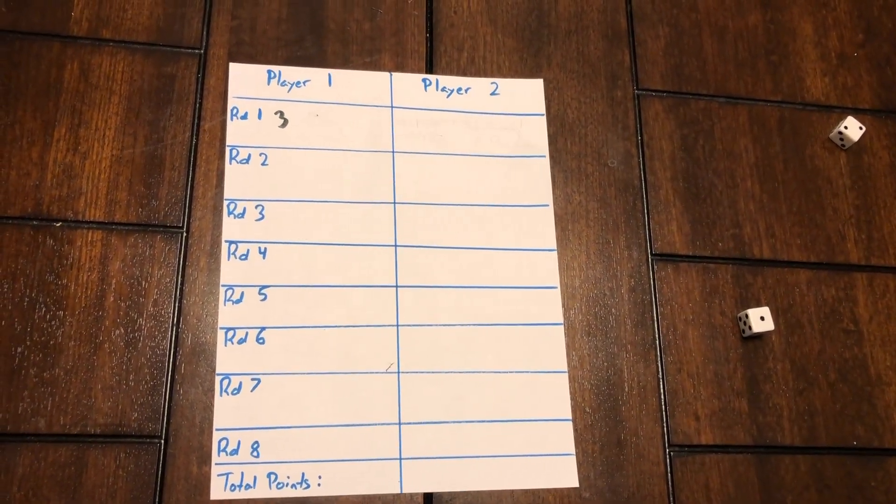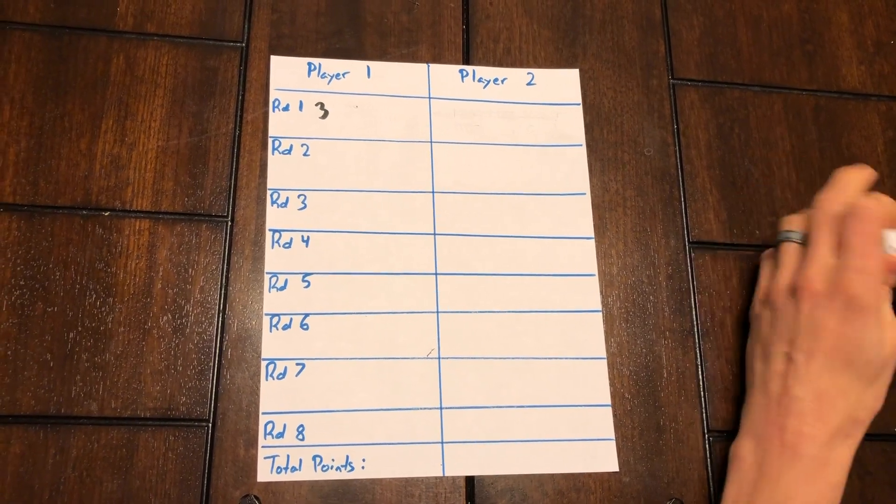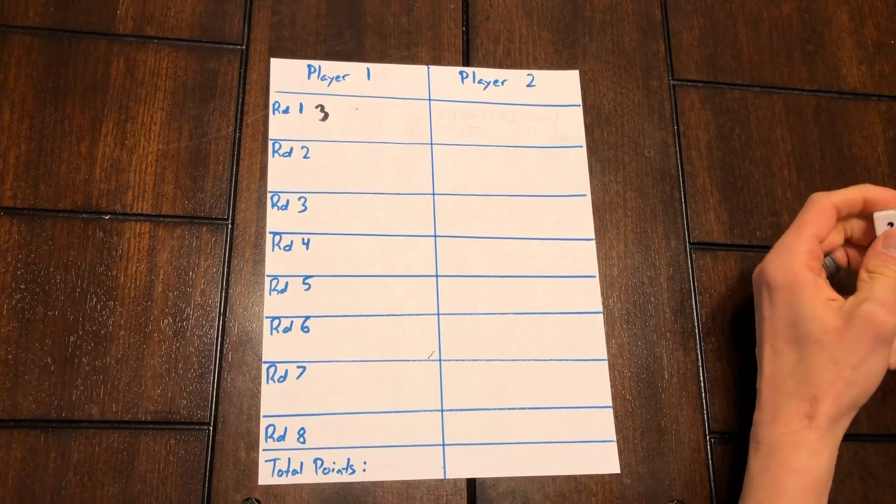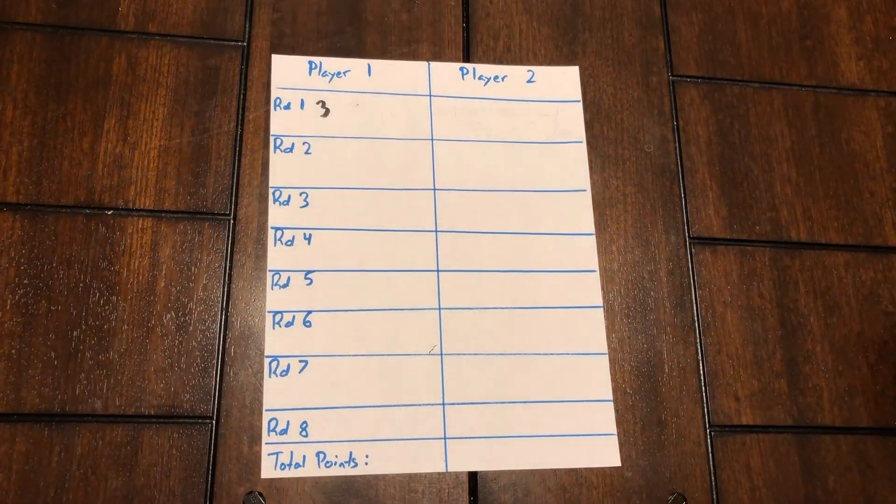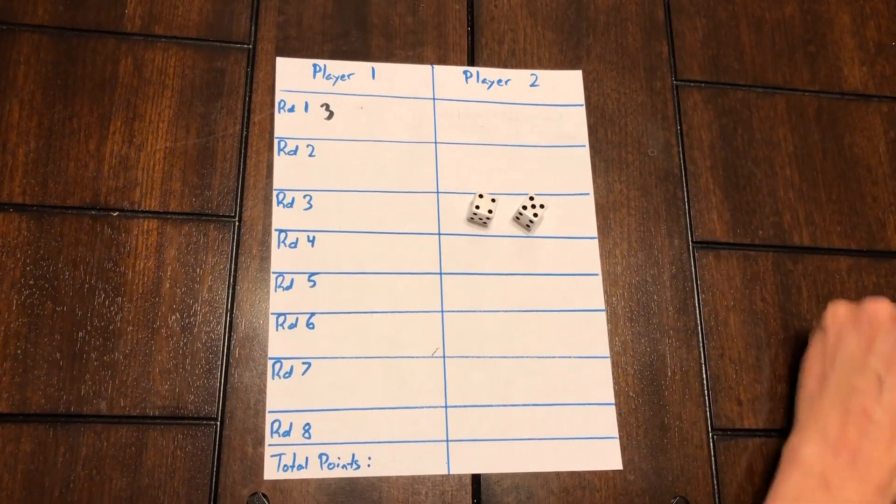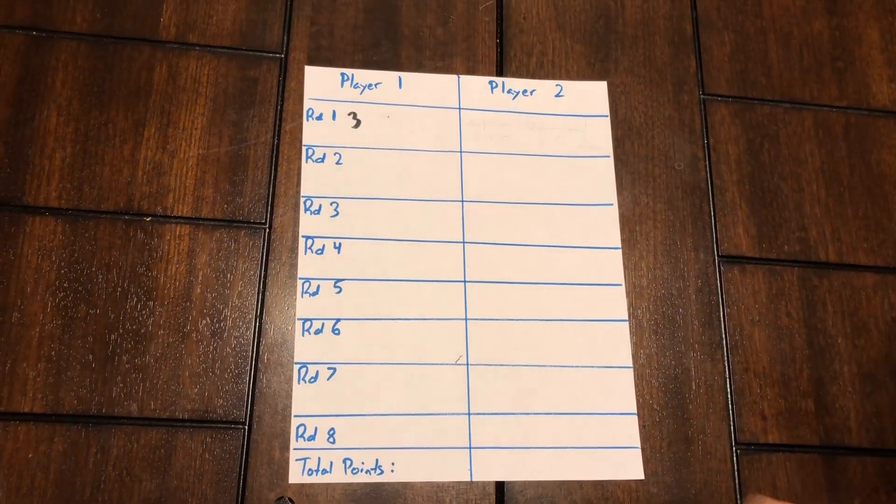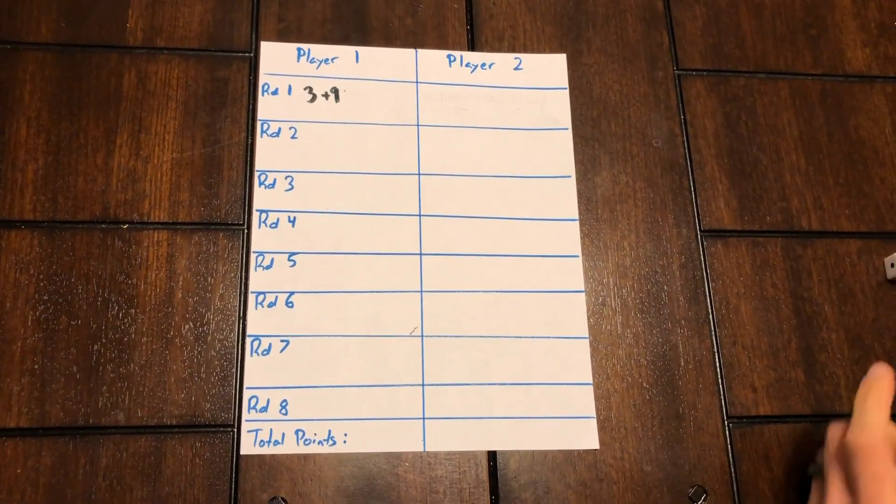Then I have a choice. I can decide to save that three, those three points, or I can risk that three and add to it by rolling again. The catch is, if I roll again and I hit an eight, I lose all those points. So I'm going to go ahead and roll the dice again, and I get a four and a five, which gives me nine. So now I'm going to add nine to that roll.